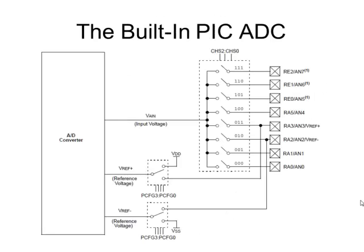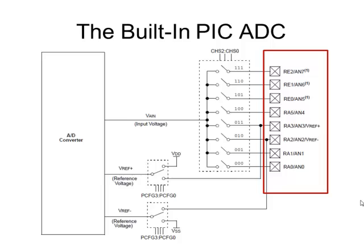The PIC has a built-in analog-to-digital converter. A lot of microcontrollers have ADC converters built into them. We'll take a look at it a little piece at a time. This ADC has eight different channels, which means it can look at eight different analog inputs. It can only see one of those at any given time, but it can look at eight different inputs.